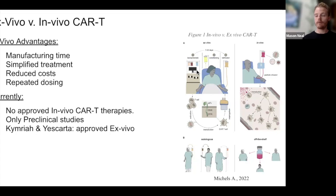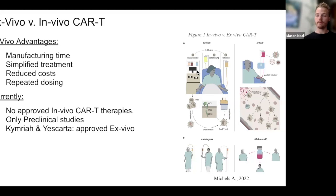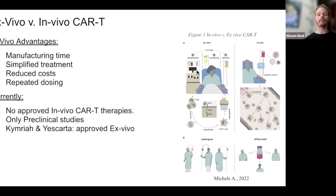And if we look at in vivo methods in comparison, it's a much shorter process if we utilize viral vectors with surface engineering to target T cells and deliver the CAR gene to the T cells within the body. A major benefit of this is that it can be used off the shelf. Currently, there are no approved in vivo CAR-T therapies — these have all been researched in preclinical studies — but there are a couple of approved ex vivo therapeutics.